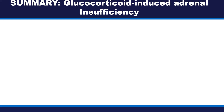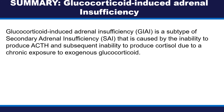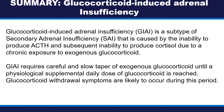In summary, glucocorticoid-induced adrenal insufficiency is a subtype of secondary adrenal insufficiency that is caused by the inability to produce ACTH and subsequent inability to produce cortisol due to chronic exposure to exogenous glucocorticoid. Glucocorticoid-induced adrenal insufficiency requires careful and slow taper of exogenous glucocorticoid until a physiological supplemental daily dose of glucocorticoid is reached.